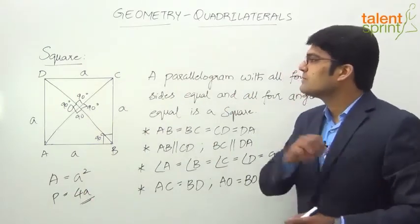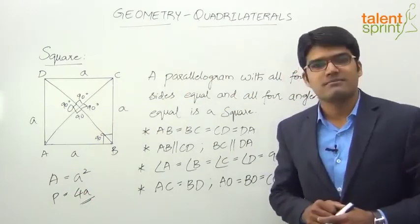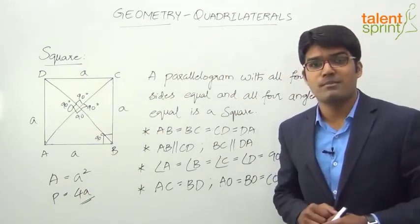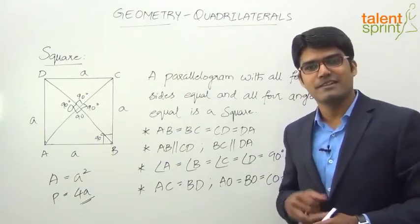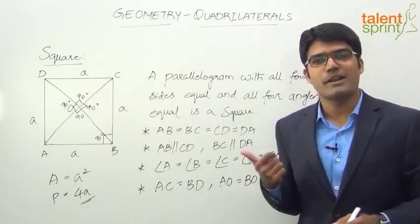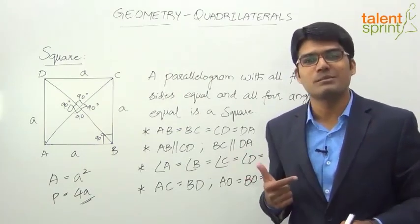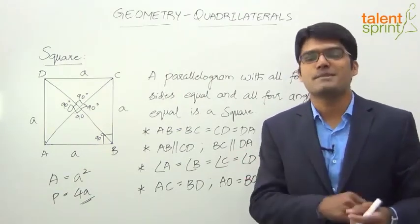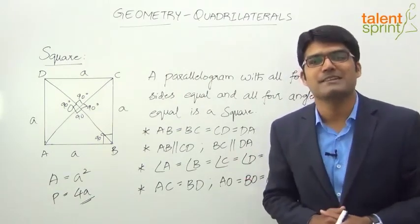So that's about the special quadrilateral — a square. It is a special parallelogram, a special rhombus, and a special rectangle.